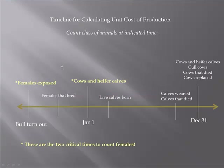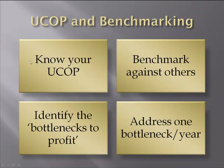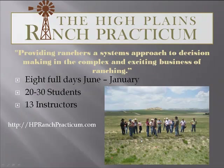To sum up: know your unit cost of production, benchmark that data against known averages, identify any bottlenecks to profit — what are the areas that are holding you back from being a high profit, low cost producer — and then start addressing one of these bottlenecks per year. Maybe you can address more than one, but certainly identify one and come up with a strategy to address that bottleneck for profit each year. That's the nuts and bolts of a unit cost of production analysis.